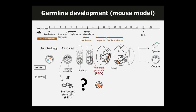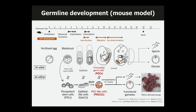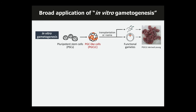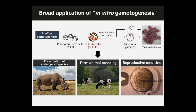To induce PGCs in vitro, we first induce epiblast-like cells (EpiLC), which are highly similar to in vivo post-implantation epiblast. Then, by stimulation of BMP signaling, we can induce PGC-like cells (PGCLCs), which are highly similar to in vivo PGCs. Importantly, they can functionally produce gametes which contribute to viable offspring by transplantation into the gonad or co-culture with gonadal somatic cells. If this in vitro gametogenesis system is applicable to other mammals, broad applications will be feasible, such as preservation of endangered species, farm animal breeding, and human reproductive medicine.